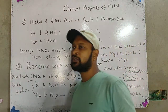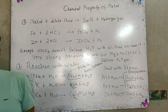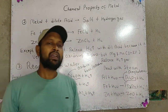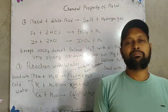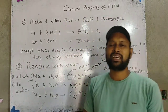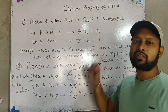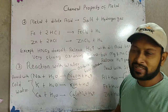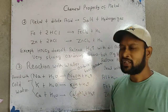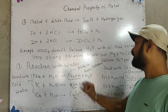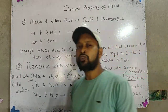Nitric acid does not release hydrogen gas because it is a very strong oxidizing acid. However, there are some elements such as magnesium and manganese which do evolve a very small amount of hydrogen gas when they react with nitric acid — only about one to two percent.